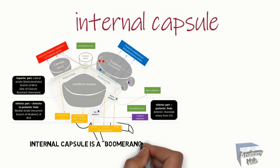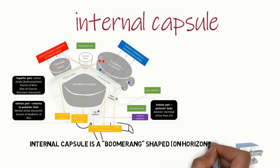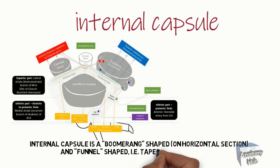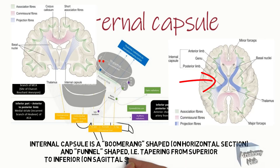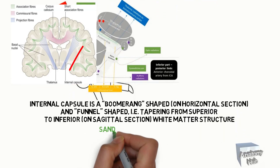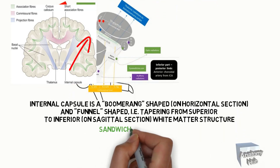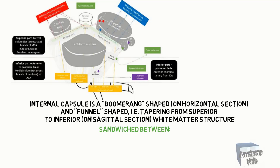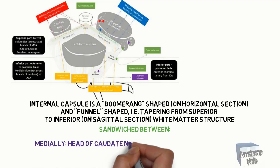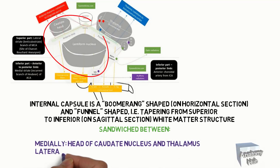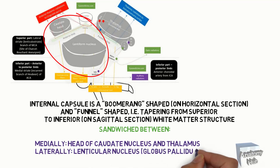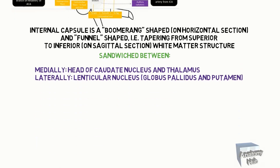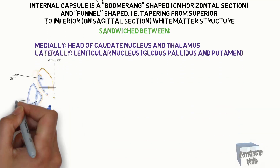The internal capsule is a boomerang-shaped structure on horizontal section, and funnel-shaped — that is, tapering from superior to inferior — on sagittal section. It is a white matter structure sandwiched between, medially, the head of the caudate nucleus and thalamus, and laterally, the lenticular nucleus, globus pallidus, and putamen.